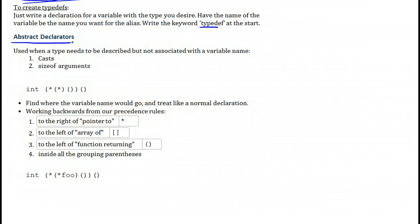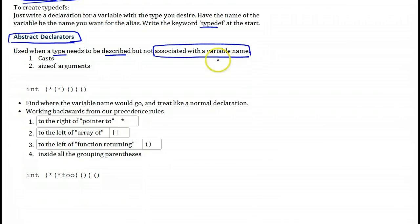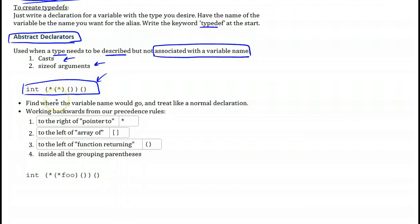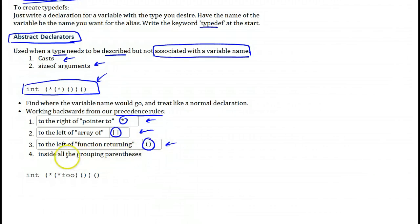One final point: abstract declarators. Sometimes we need a type to be described but not associated with a variable name — no identifier. This is for two purposes: either for casting, or to act as arguments for sizeof. When you see one, you treat it just like a normal declaration, but first you have to find where a variable name would go. You work backwards from the precedence rules: the variable name must be to the right of all pointers, to the left of all arrays and function-returning elements, and inside all grouping parentheses.